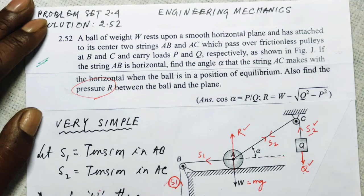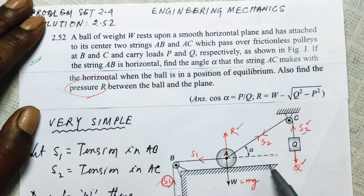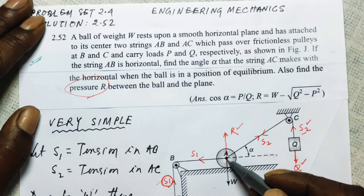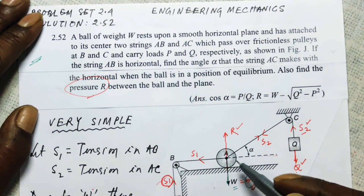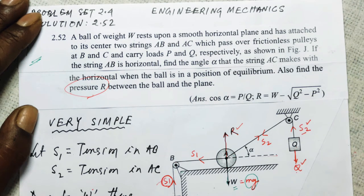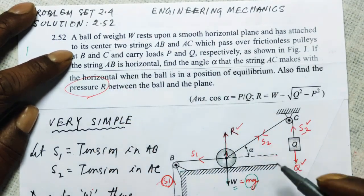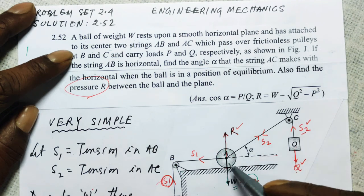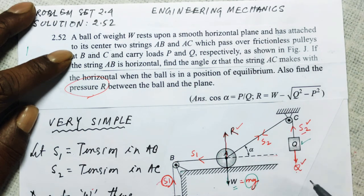The statement of the problem is: a ball of weight W is resting on a horizontal surface which is frictionless. Its weight mg is written as W, so there will be a normal reaction R pointing upward. The ball rests upon a smooth horizontal plane and has attached to its center two strings AB and AC. String AC passes over a pulley from which a weight Q is hanging, and string AB is horizontal, passing over a frictionless pulley from which a weight P hangs vertically downward.